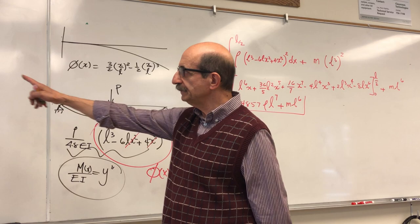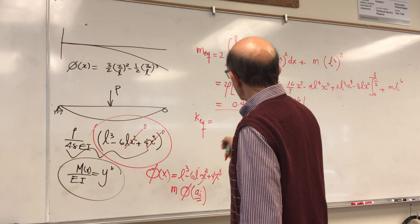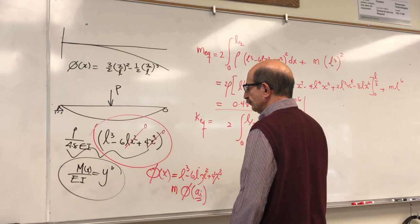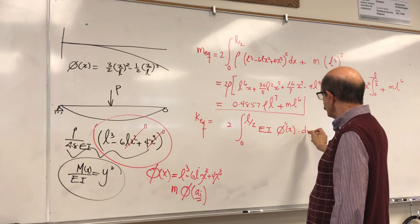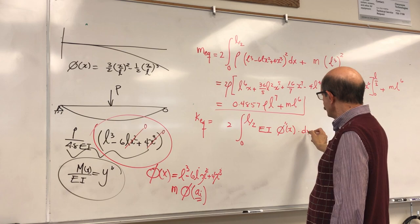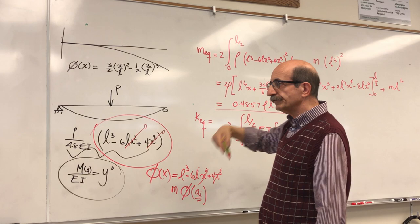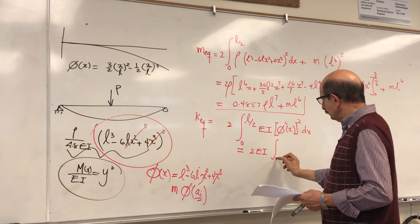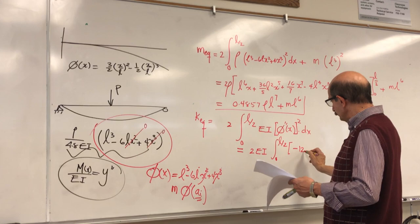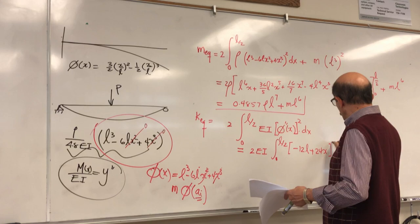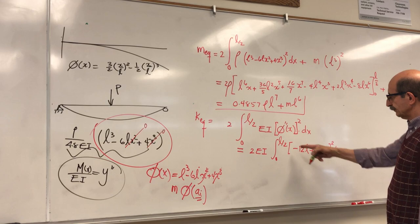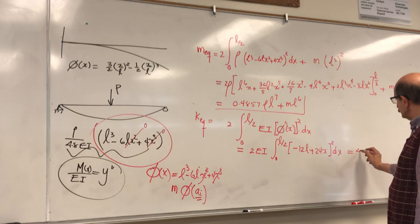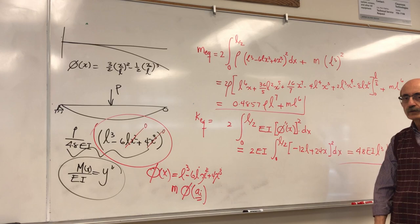For k_eq, it's simpler because there are no lumped springs — only the beam. So we have 2·EI times the integral from 0 to L/2 of the second derivative of phi squared dx. Taking the second derivative and squaring it gives the integrand (-12L + 24x)^2, and after evaluation at x = L/2, we get k_eq = 48·EI/L^3.